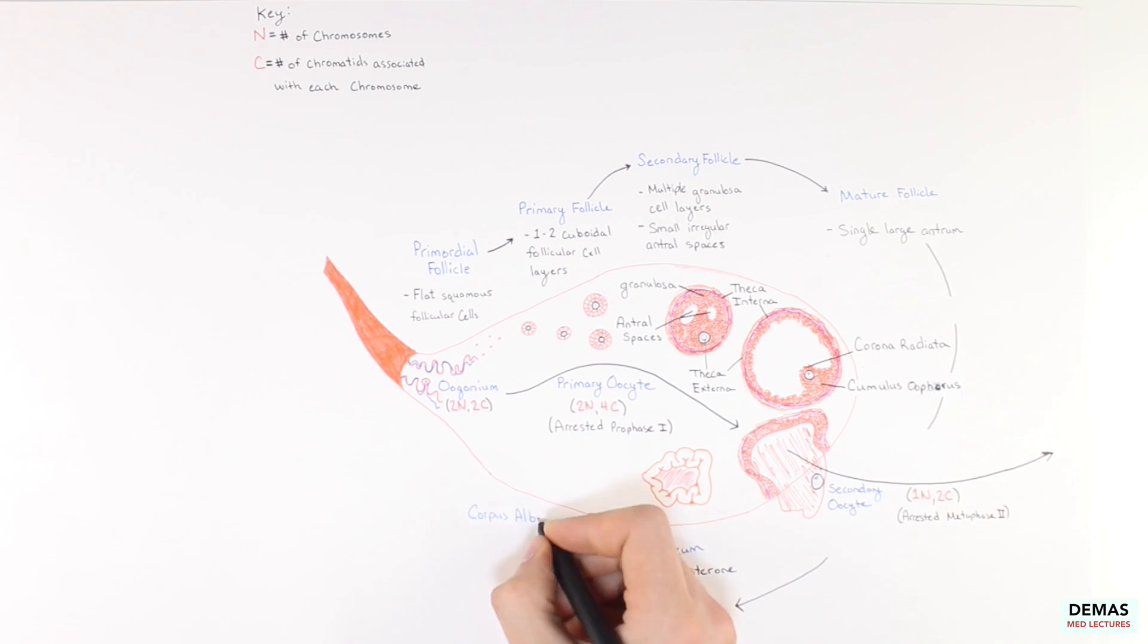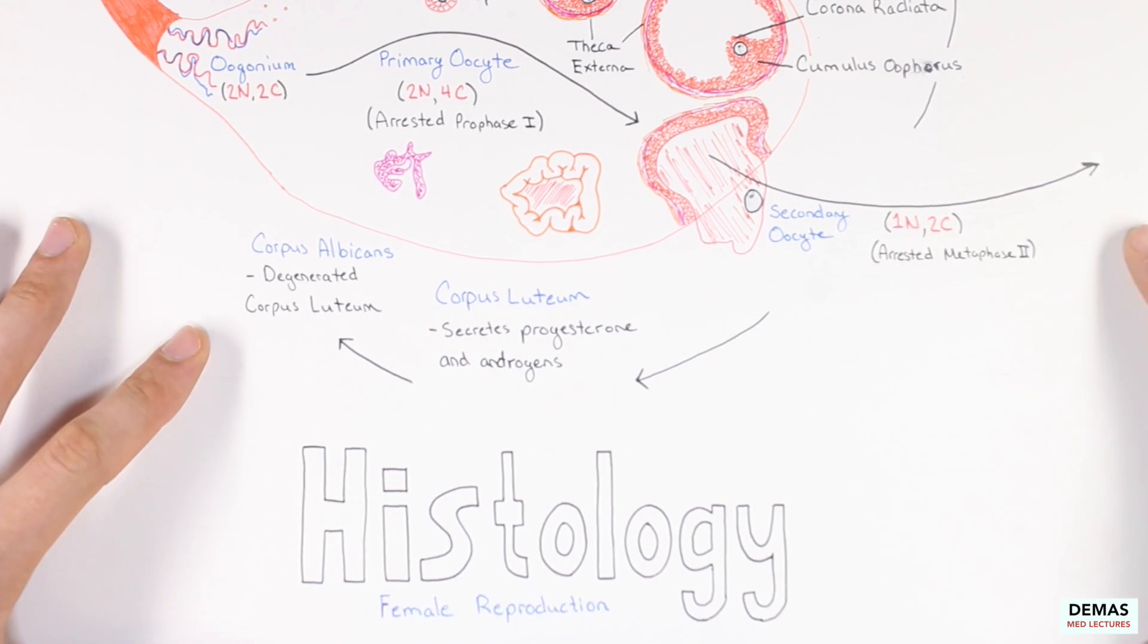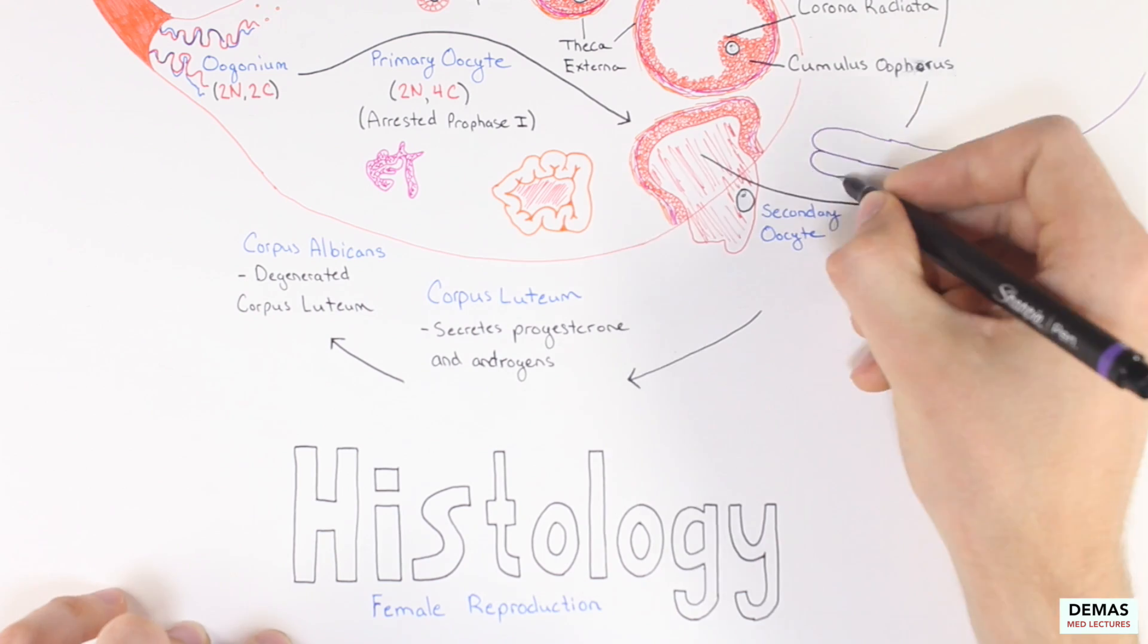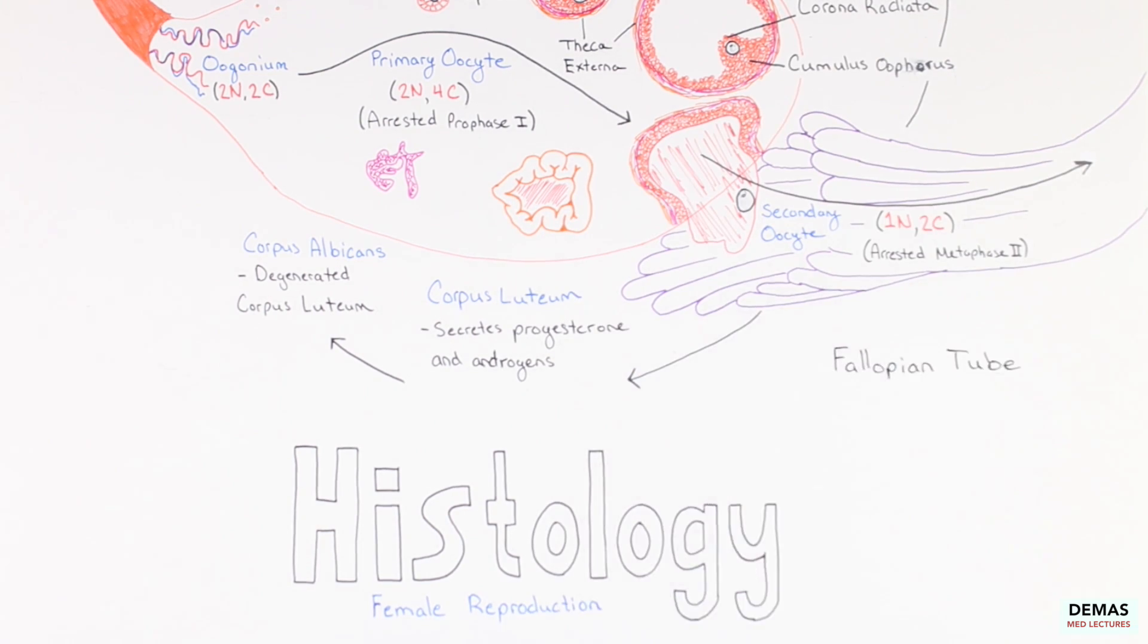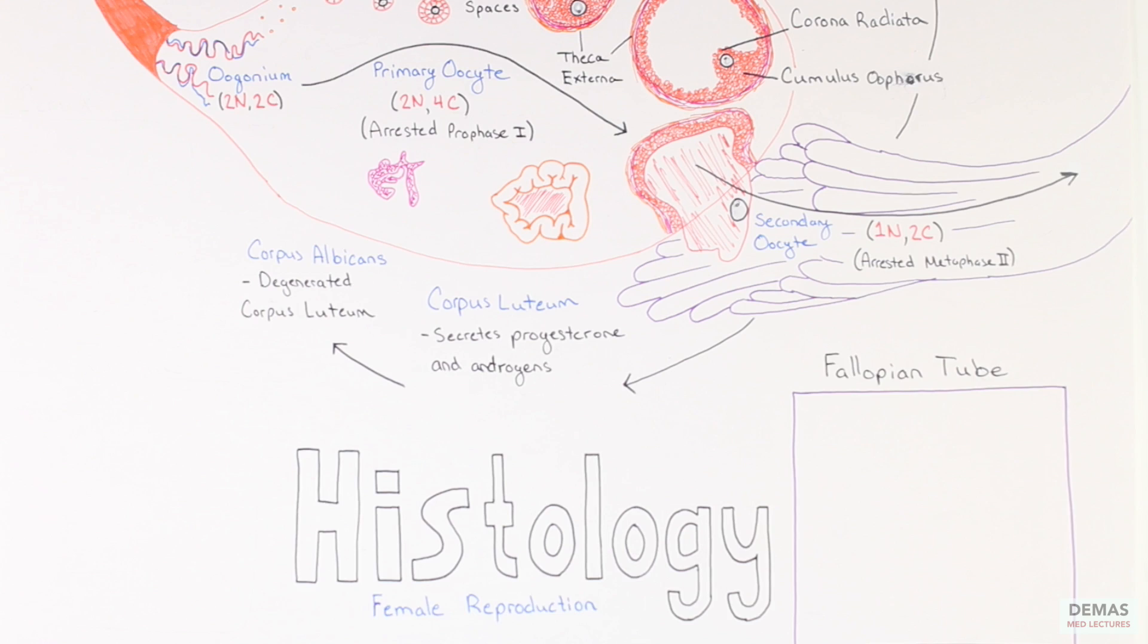If fertilization does not occur, the corpus luteum degenerates into a dense collagenous scar called the corpus albicans and appears pink on H&E stain. Following ovulation, the secondary oocyte is collected and guided by fimbria into the fallopian tube and propelled towards the uterus.